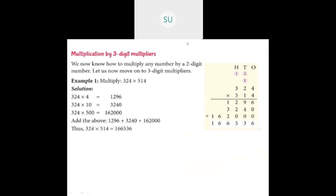Then we multiply with the tens digit, which is 1. We put a 0 in the ones place and multiply 1 by 324 to get 3,240. Then we multiply 324 with 5, which is in the hundreds place, so we put zeros in the tens and ones place and multiply 324 by 5 to get 1,62,000.